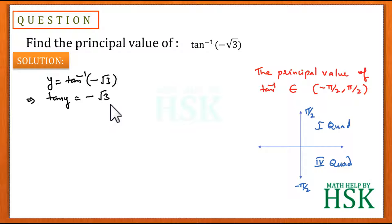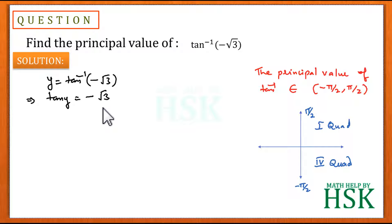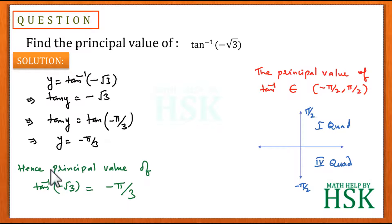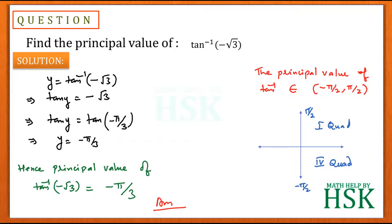So tan y equals minus root 3. We know that tan 60 degrees equals root 3, so measuring 60 degrees in the clockwise direction gives tan of minus 60 or tan of minus pi by 3 equals minus root 3. This gives tan y equals tan of minus pi by 3, so y equals minus pi by 3. Therefore the principal value of tan inverse of minus root 3 is equal to minus pi by 3, which is the required answer.